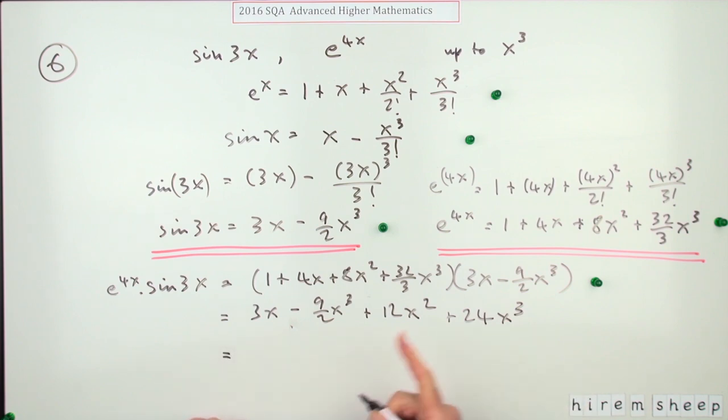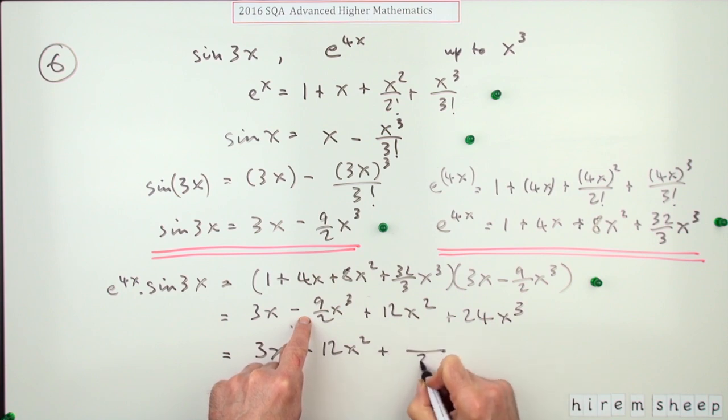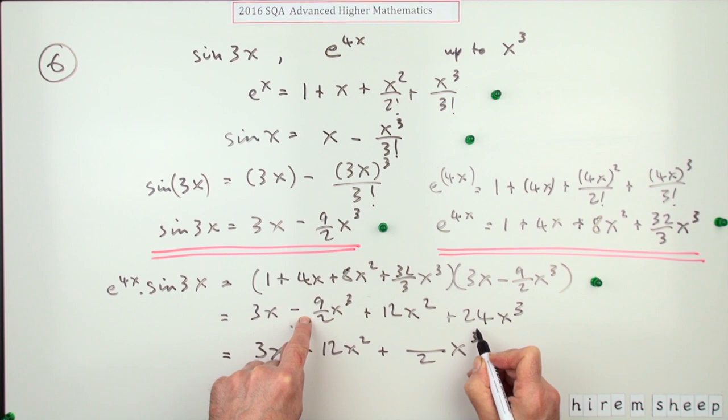So finally, the answer will be, put them in order: 3X, only one thing saying X squared, plus 12X squared, and then this part, 24 minus 9 upon 2. So that's 48 take away 9, which will give you 39 over 2 X cubed for the sixth mark.